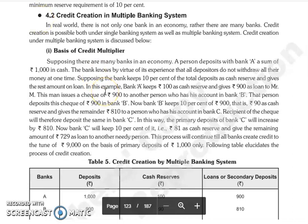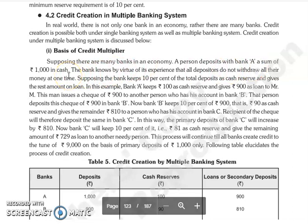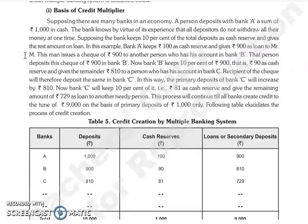On the basis of the credit multiplier, this is not just an assumption but what practically happens. In the economy, there are many banks. One person has deposited money. Bank A receives 1,000 rupees cash. Now, Bank A keeps 10% cash reserve, which is 100 rupees, and gives out the rest of 900 rupees as a loan.